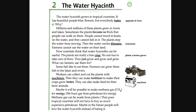Millions and millions of these plants grow in rivers and lakes. Sometimes the plants become so thick that people can walk on them. People cannot travel in boats on the water, and they cannot fish in it. The plants stop the water from moving. Then the water carries diseases. Farmers cannot use the water on their land.